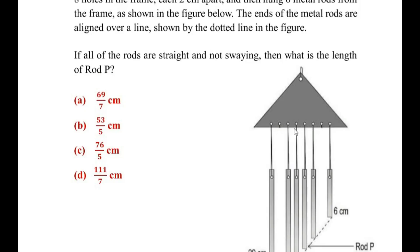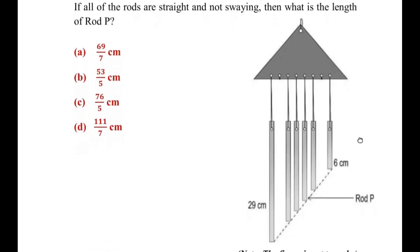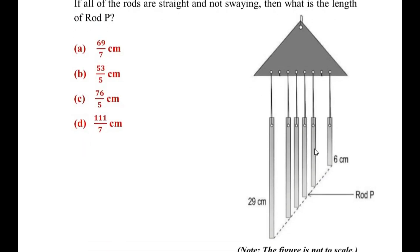And through these holes she has hung 6 metal rods as shown. The ends of the metal rods are aligned over a line shown by the dotted line in the figure. So as you can see all the 6 rods are resting on this dotted line.